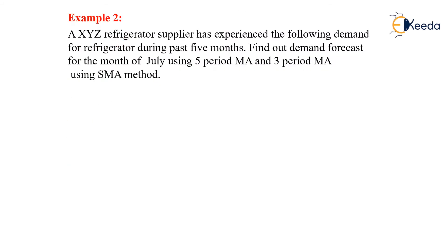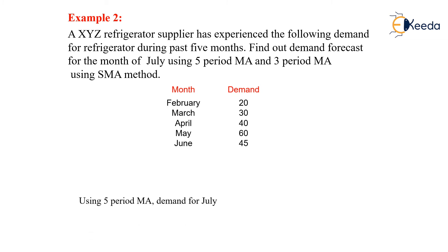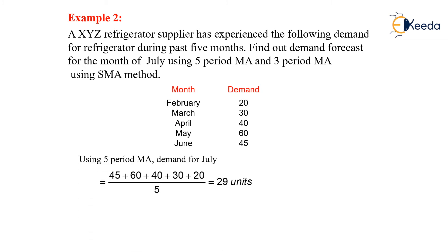Coming to our next problem, it is defined as a XYZ refrigerator supplier that has experienced the falling demand for refrigerator during the past five months. We need to find out the demand forecast for the month of July using five-period moving average and three-period moving average using the simple moving average method. We are having these demands for the months of February, March, April, May, and June, which are 20 for February, 30 for March.